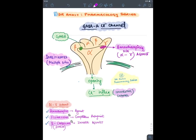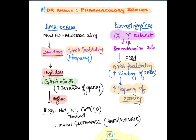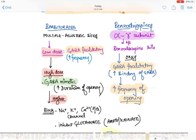Barbiturates act on multiple allosteric sites, while benzodiazepines act only on the alpha-gamma subunit. Benzodiazepines do not open the channel directly; they increase the binding of GABA, an inhibitory neurotransmitter. Hence benzodiazepines are called GABA facilitatory — they increase the frequency of chloride channel opening.